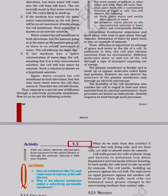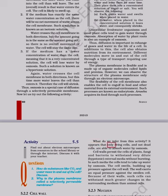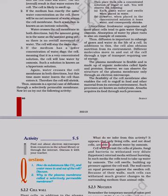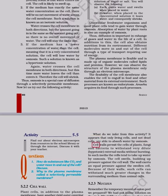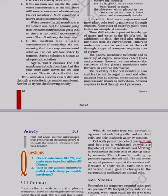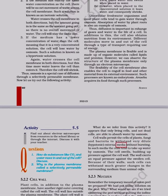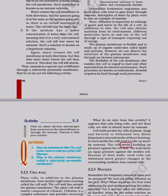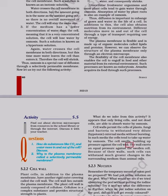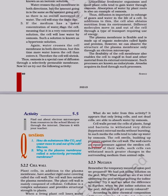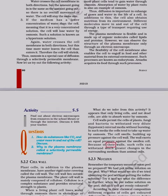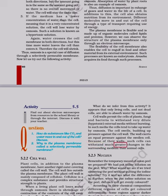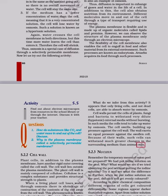Activity 5.5: What do we infer from this activity? It appears that only living cells, and not dead cells, are able to absorb water by osmosis. Cell walls permit the cells of plants, fungi and bacteria to withstand very dilute, hypotonic external media without bursting. In such media the cells tend to take up water by osmosis. The cell swells, building up pressure against the cell wall. The wall exerts an equal pressure against the swollen cell. Because of their walls, such cells can withstand much greater changes in the surrounding medium than animal cells.